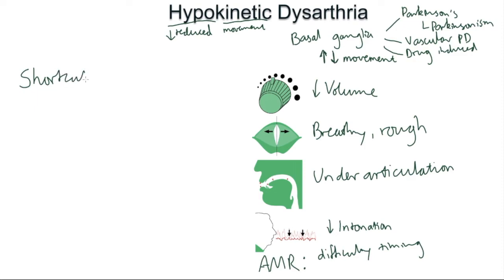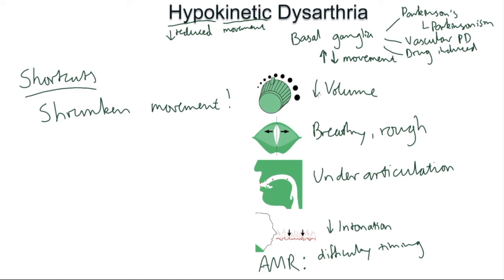The shortcut for this: if you think reduced volume, all of these features have shrunken movement in common — whether it's respiration, phonation, articulation, or prosody, everything's reduced, which fits with the name. The other half is the rigidity that comes with Parkinson's, which gives sort of frozen muscles. As well as the feedback issues, part of the reason you get masked face and under-articulation is a real rigidity of the muscles which doesn't allow them to move very well.